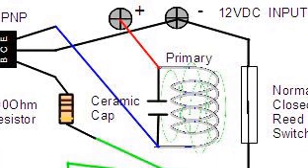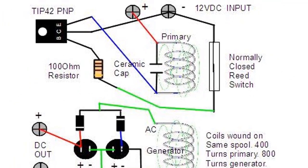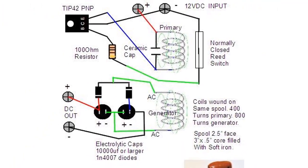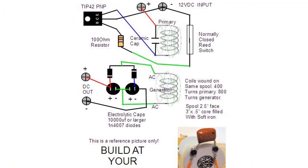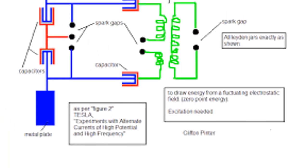This electricity can be harnessed and used to power devices or produce free energy. Bifiler coils are used in different versions of the magnifying transmitter to generate radiant energy. The coils are made up of two wires of equal length that are twisted together and then coiled around a former. When current is applied to the coil, it creates a magnetic field.